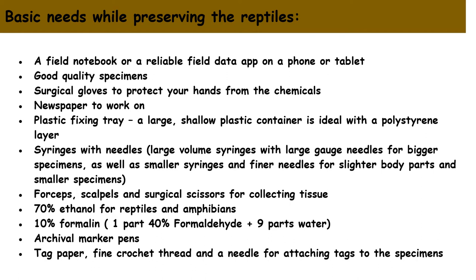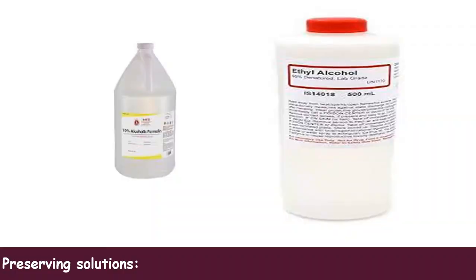Additional basic needs include: scalpel and surgical scissors for collecting tissues; 70% ethanol for reptiles — if you are preserving any reptile or amphibian, 70% ethanol is essential; and 10% formalin, which consists of one part 40% formaldehyde plus nine parts water. Also needed are marker pens for marking where to inject the preservative, and tag papers, thread, and needle for attaching tags to the specimen.